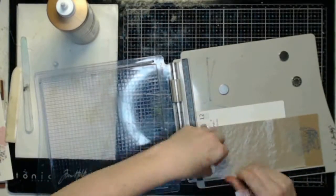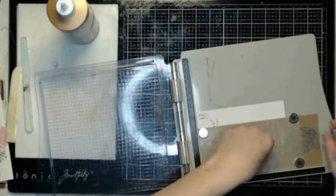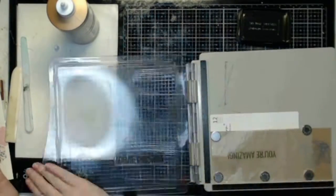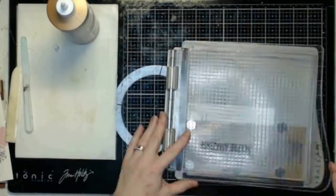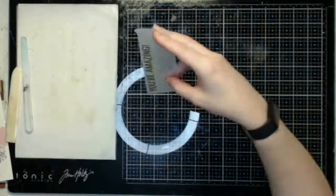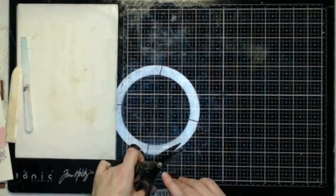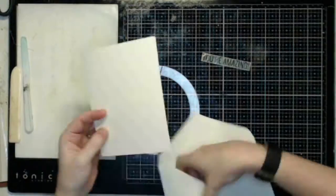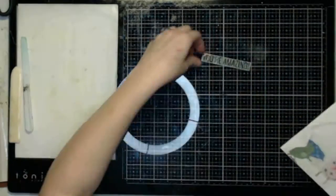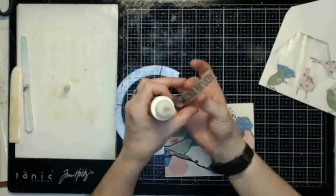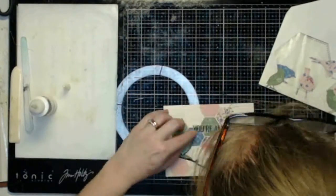Then I just grab up a bit of that homemade glassine and some StazOn and make my sentiment for the front of the card. I used some Judikins Diamond Glaze behind that just so that it wouldn't really show up behind that glassine.